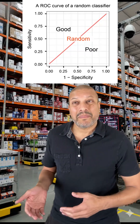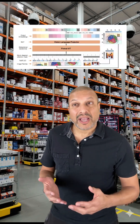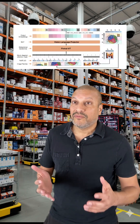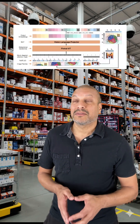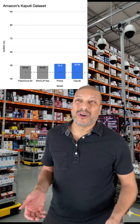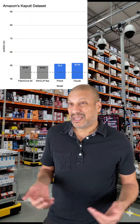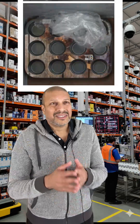So I went back to my original idea and tried those really good vision language models like Pixtrel and Claude. Big improvement? Only if you call a .02 AUC jump a big improvement. Well, this isn't good.